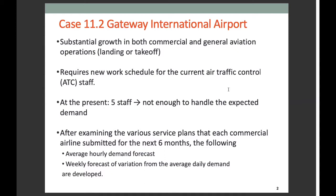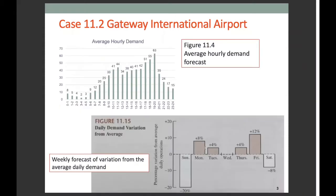The administration feels that the airport might need to hire additional ATC personnel because the present staff of five probably will not be enough to handle the expected demands. After examining the various service plans that each commercial airline submitted for the next six months, the following average hourly demand forecast and weekly forecast of variation from the average daily demand are developed. The first figure provides an average hourly demand forecast of total operations, and the bottom figure provides a weekly forecast of variation from the average daily demand for each day of the week.